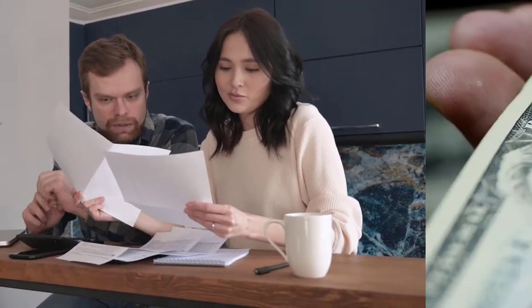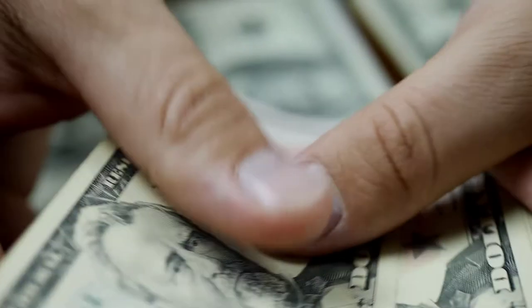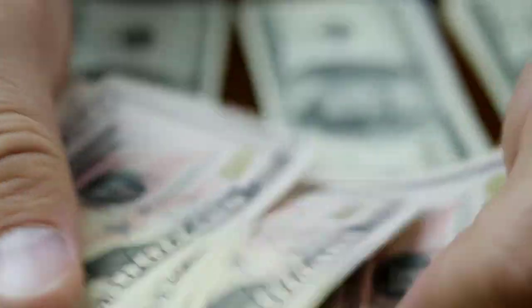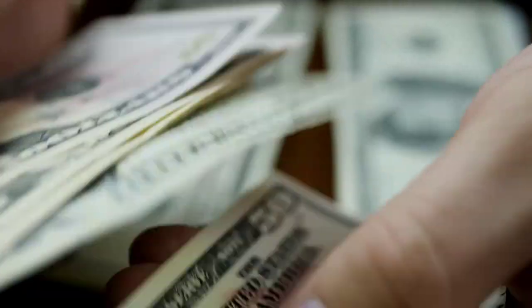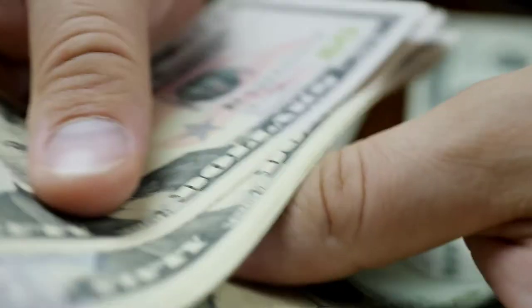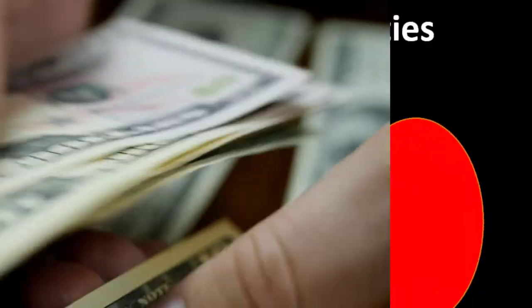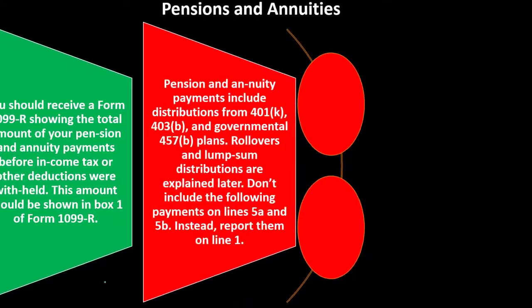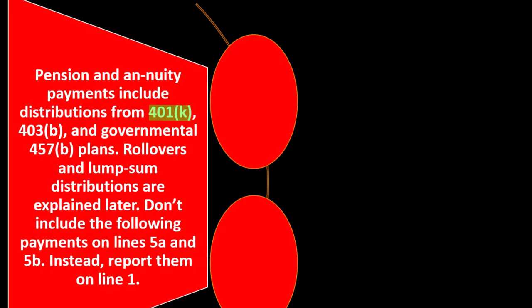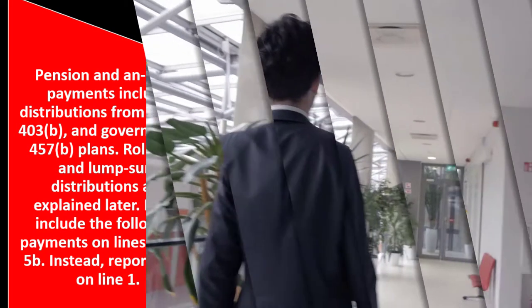You should receive a Form 1099-R showing the total amount of your pension and annuity payments before income tax or other deductions were withheld. This amount should be shown in box 1 of Form 1099-R. Pension and annuity payments include distributions from a 401k, 403b, and government 457b plans.